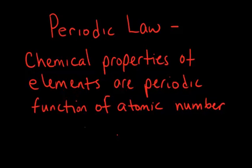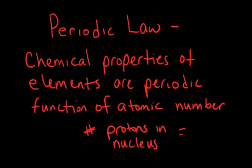The atomic number, of course, is the number of protons in the nucleus. Sometimes the atomic number is abbreviated with the capital Z. The modern periodic table is arranged from atomic number 1 up to over 100.